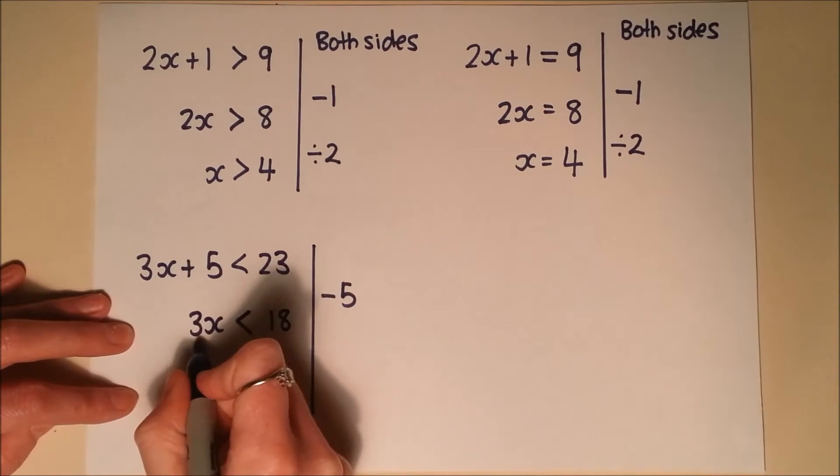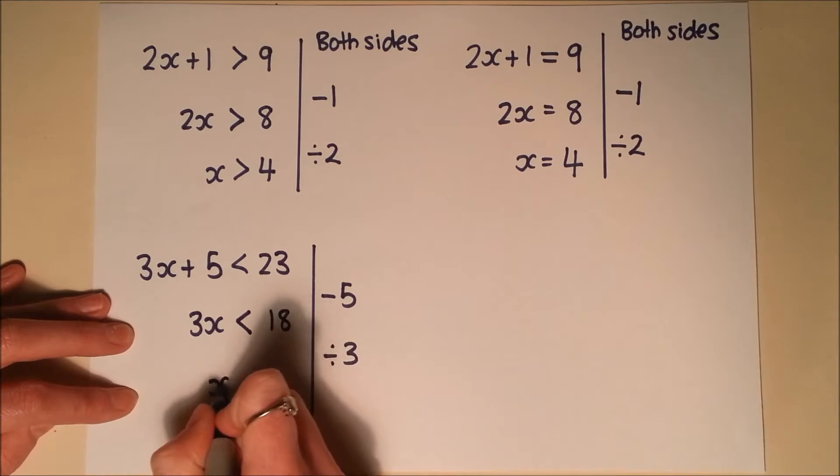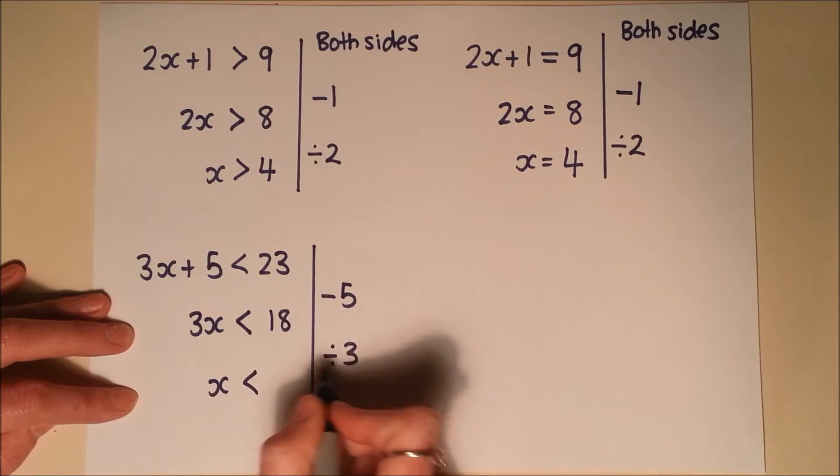And then divide by 3. So x is less than 18 divided by 3, 6.